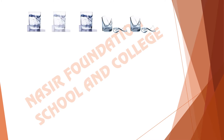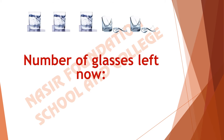One, two, three. It means number of glasses that are left now are three. Because out of five glasses, two are broken away. We are left with three glasses.